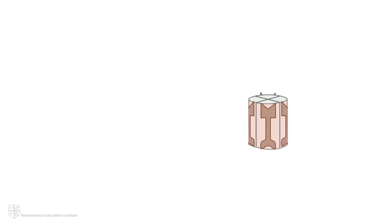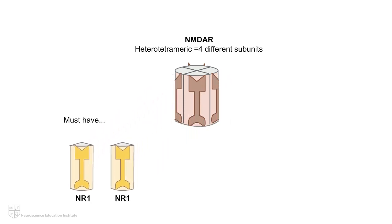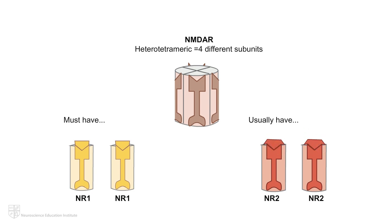The NMDAR is a heterotetrameric complex composed of two obligatory NR1 subunits containing the glycine binding site, where a coagonist binds, but more on that in a minute. The two other pieces of the NMDAR are most commonly NR2 subunits, which contain the glutamate binding site. These four subunits comprising the NMDAR form an ion channel.